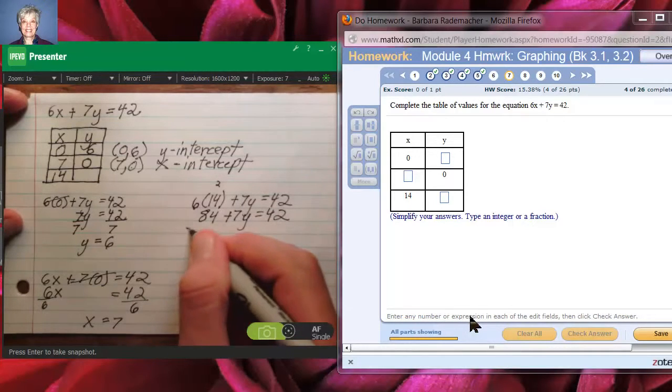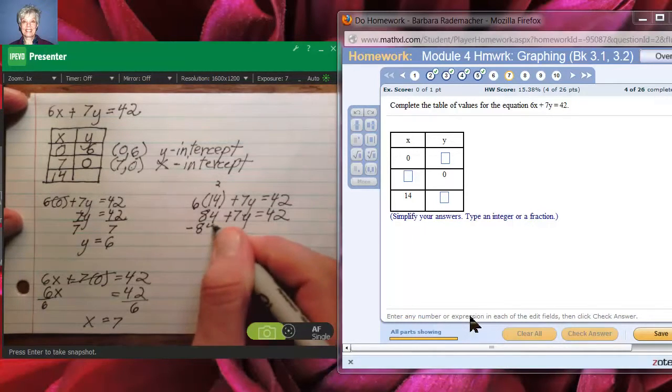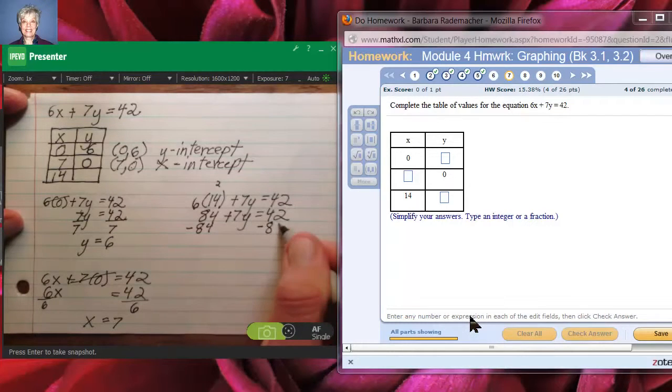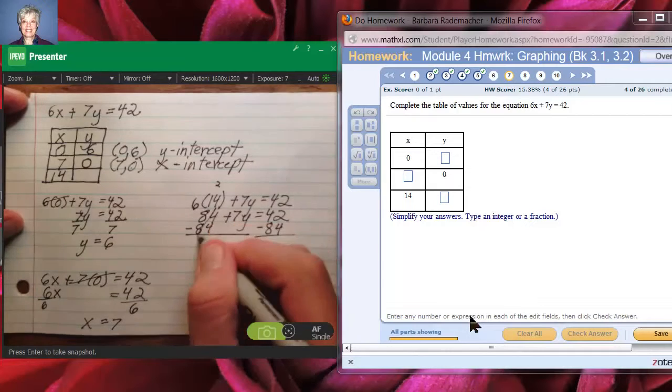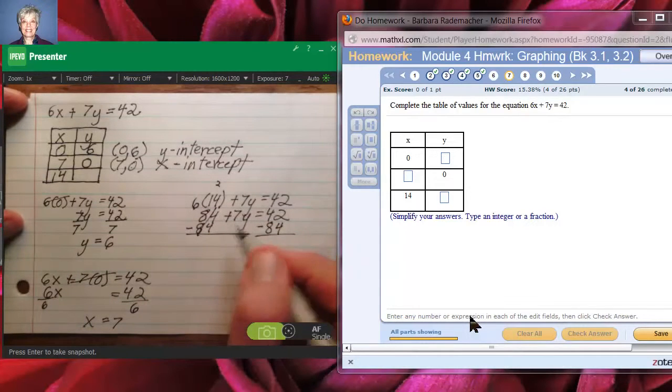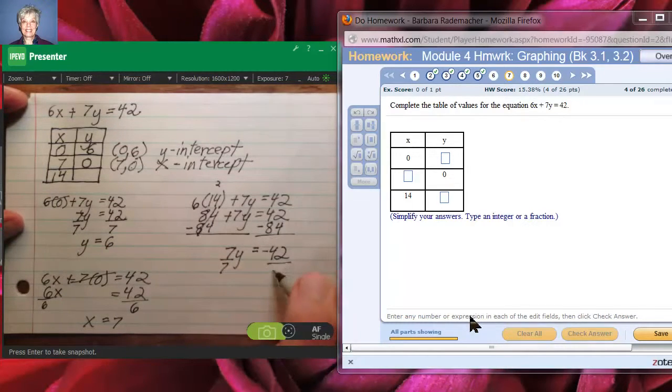Now subtract 84 from both sides of the equation, or add negative 84. Same thing. We'll have 7y equals negative 42. Then, when we divide both sides by 7, we'll get y equals negative 6.